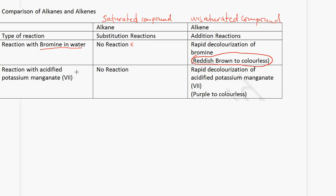If we react with acidified potassium manganate-7, there is no reaction with an alkane. But in the case of an alkene, you get rapid decolorization of the acidified potassium manganate-7 — it goes from purple to colorless. So if asked for the observation, the answer is: the solution changes from purple to colorless.